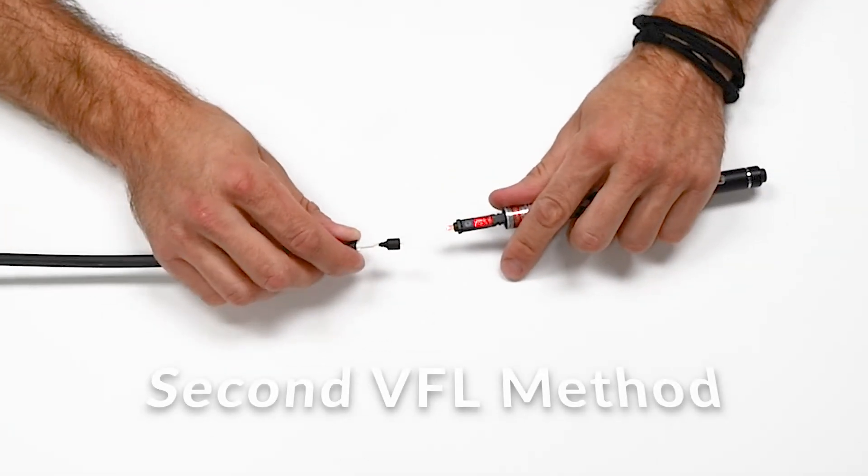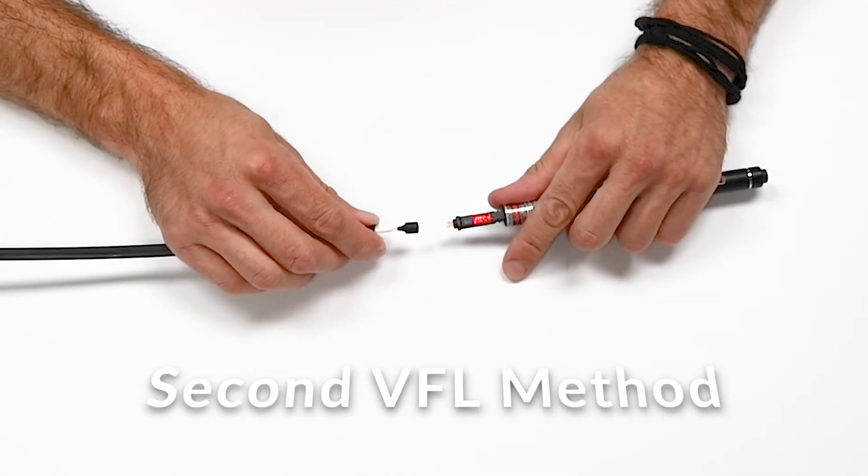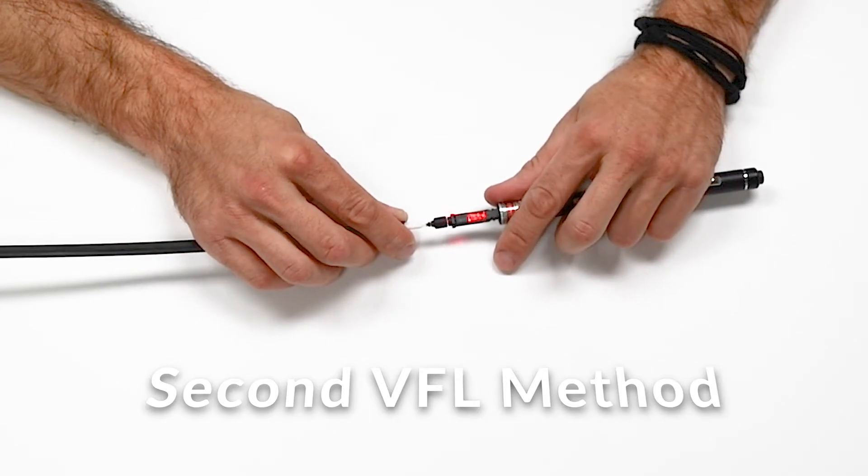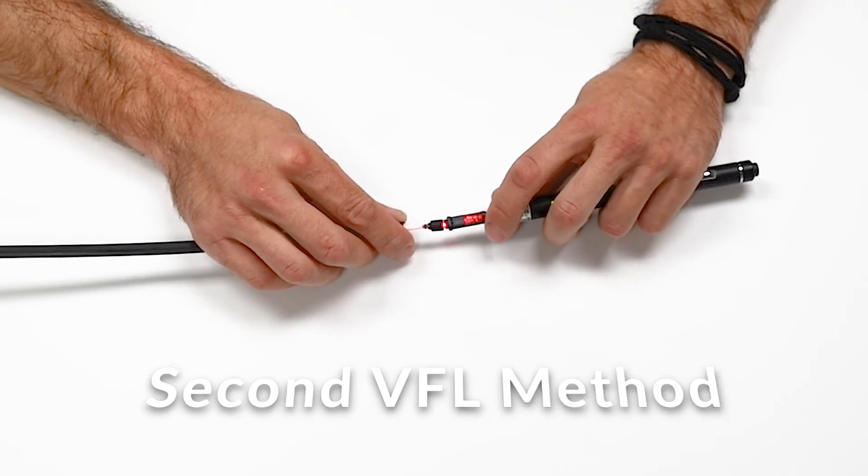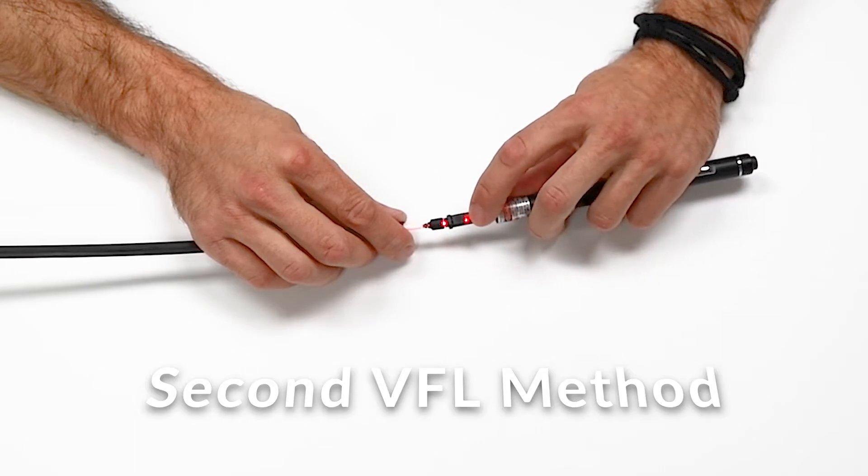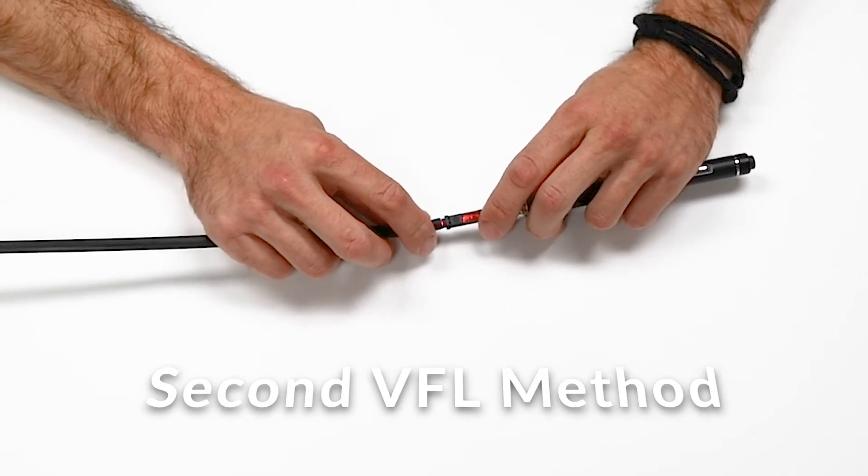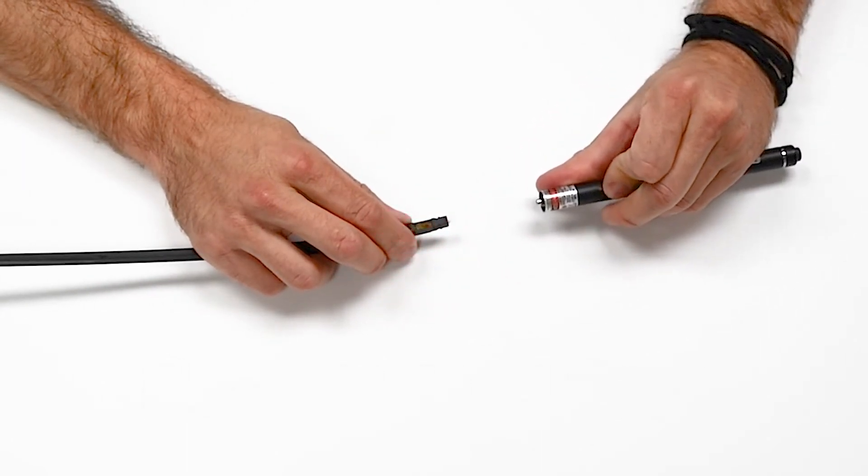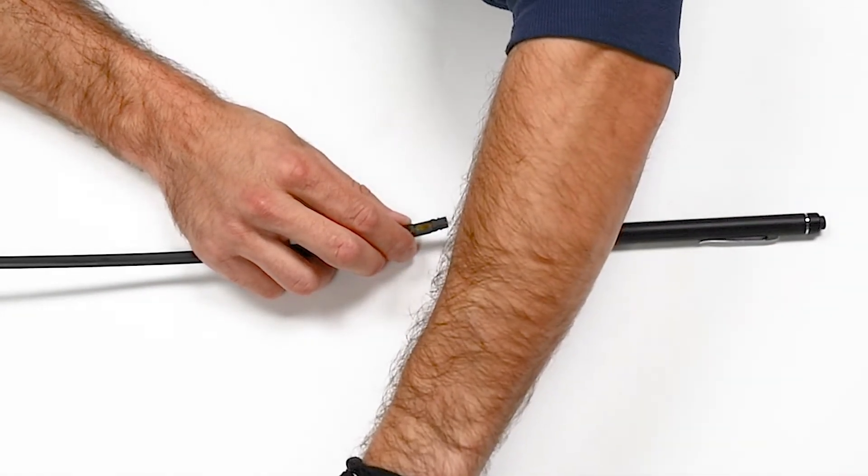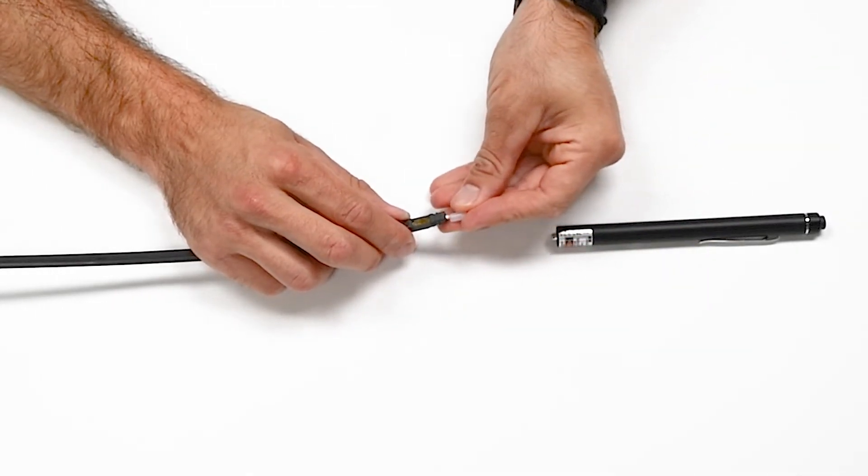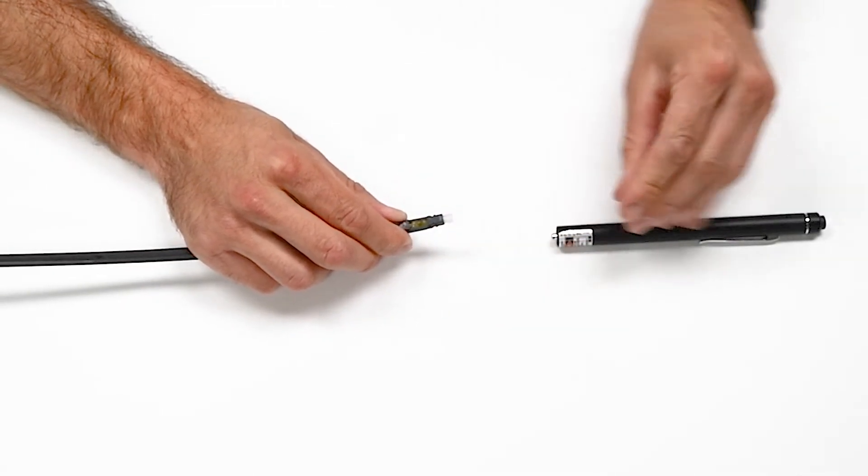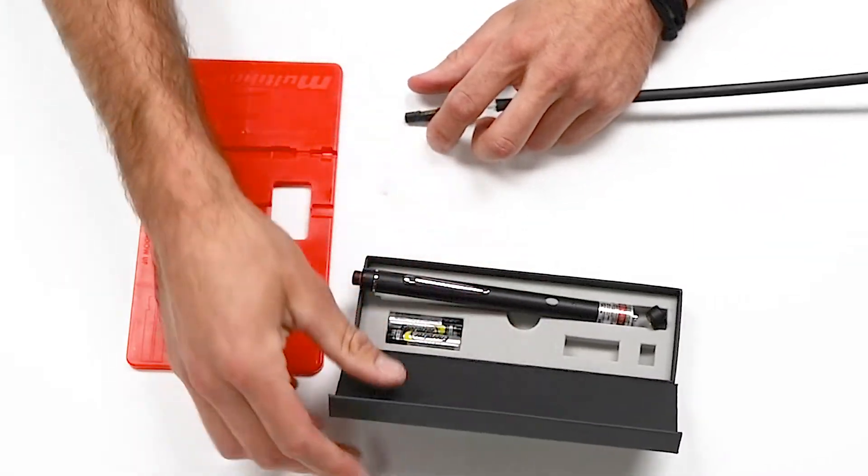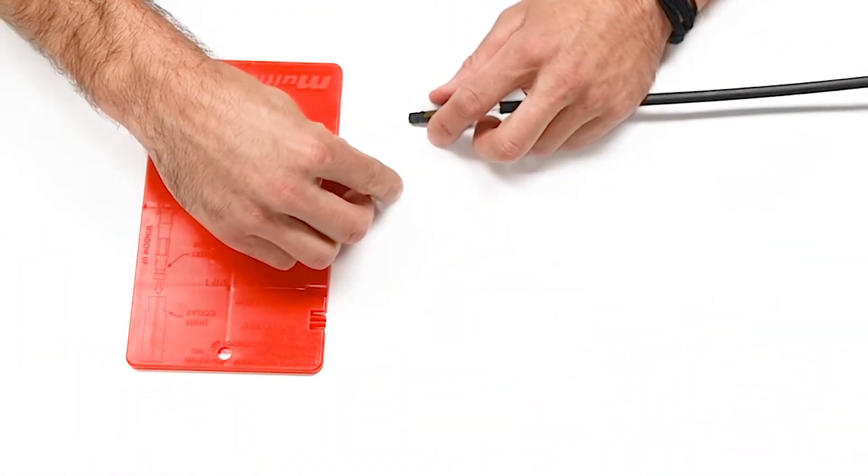By installing the fiber into the connector while using a VFL, you'll be able to ensure that you properly seat the fiber. As stated earlier, the window will remain bright if there is no connection. So if you're using the VFL while terminating the fiber, you'll be able to notice the difference between a bright window and a dim window. This will leave you a sense of security in knowing that you have properly seated the fiber within the connector.